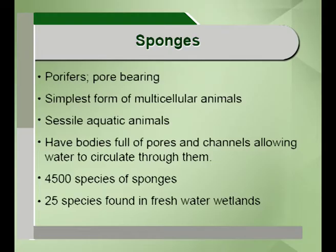Sponges, or porifera, have a spongy body comprising a canal system where water flows in and out. There are 4,500 species of sponges in total, and 25 species or types of sponges are found in freshwater wetlands alone.